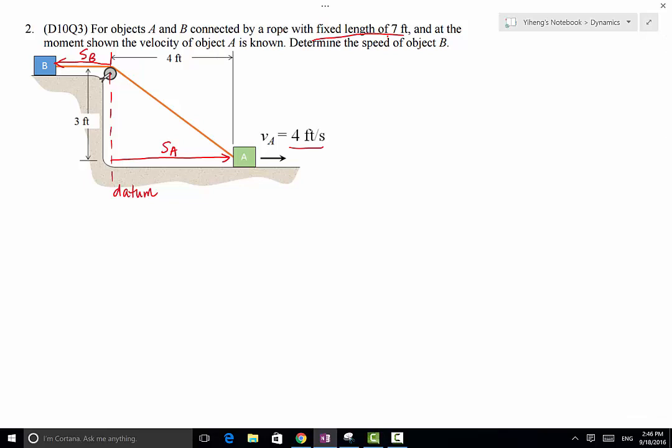So now the next step is to find the relation between SA and SB. These two objects are connected by the rope with a fixed length, and that's important. That's what we're going to use to establish this relation. So the total length of the rope is given by this portion, which is simply SB, plus this portion. So we have SB plus this question mark equals to a constant length 7. And this question mark can be easily evaluated from the Pythagorean theorem because we have a 90 degree angle here, which is 3 squared plus SA squared.